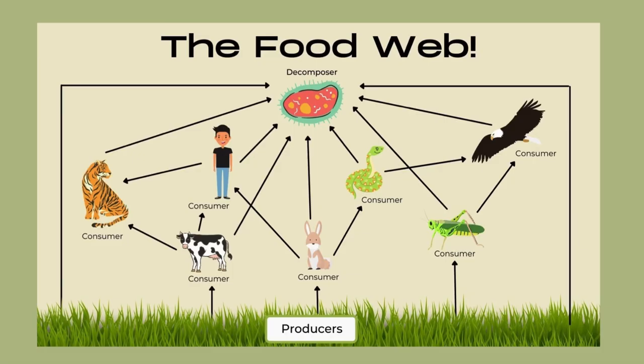Upon observing the diagram, it presents a clear graphic model of a food web — one living system that is certainly vital to the natural and recurring cycles and processes of the world.